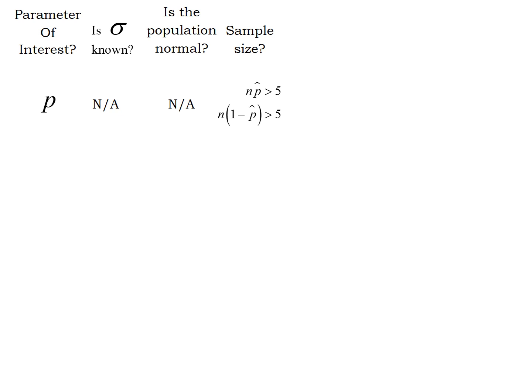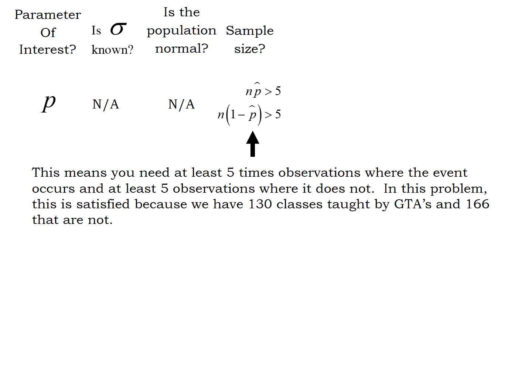We need n times p-hat to be bigger than five and n times one minus p-hat to be bigger than five. So p-hat is simply your sample proportion. That's your frequency divided by n. When you multiply that by n, the n's are going to cancel and we're left with the frequency. So what this really simplifies down to is you need at least five observations where your event occurs and five where the event doesn't occur.